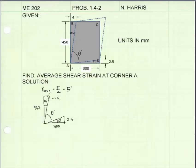I've drawn a sketch to help me solve this problem. The change in angle, which is the average shear strain, can be represented by these two triangles. I'm going to call this angle here alpha and this angle here beta. I'm going to calculate their values.